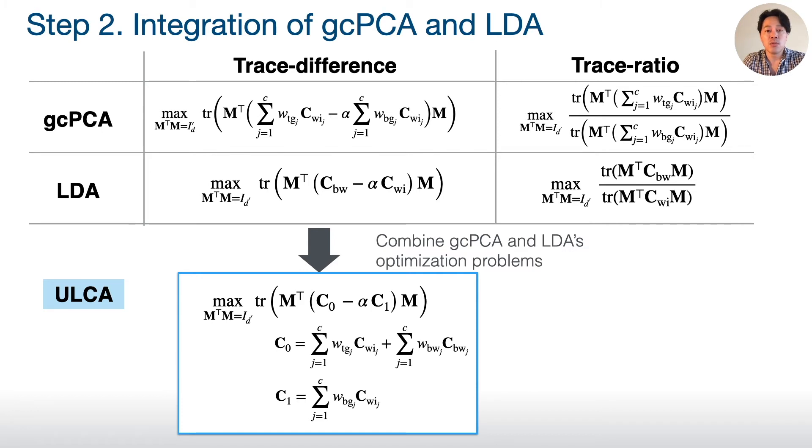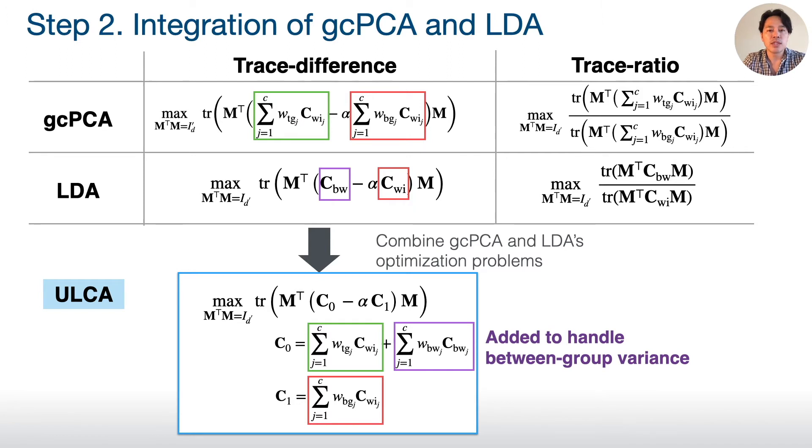For example, this is the trace difference form of ULCA. You can see, ULCA has the same terms with generalized CPCA. And to handle LDA's between-group variance, ULCA has a new term into generalized CPCA.